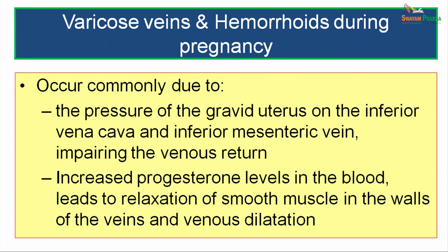Varicose veins and hemorrhoids during pregnancy occur commonly because of two reasons: first, the pressure that the gravid uterus exerts on the inferior vena cava and on the inferior mesenteric vein, impairing venous return; and second, increased progesterone levels in the blood during pregnancy which lead to relaxation of smooth muscles in the walls of the veins, causing venous dilatation.